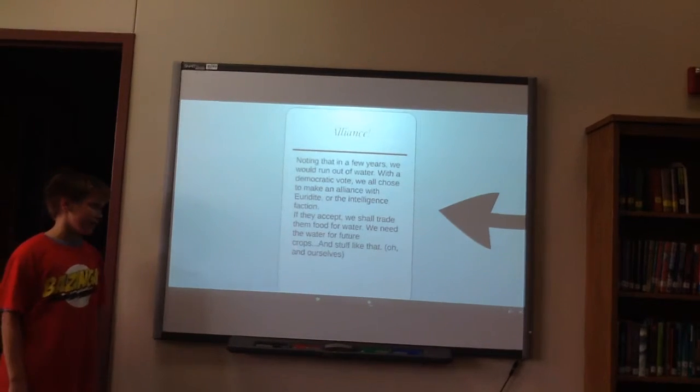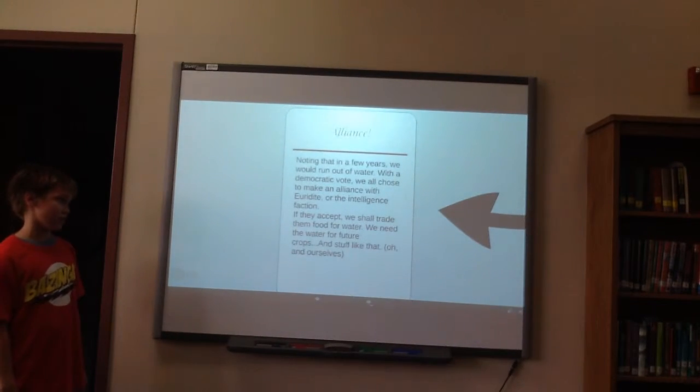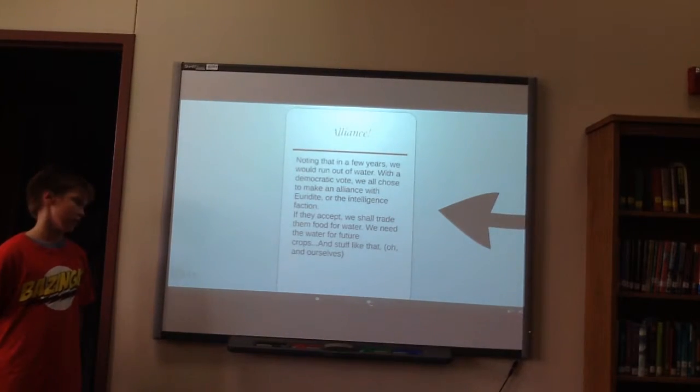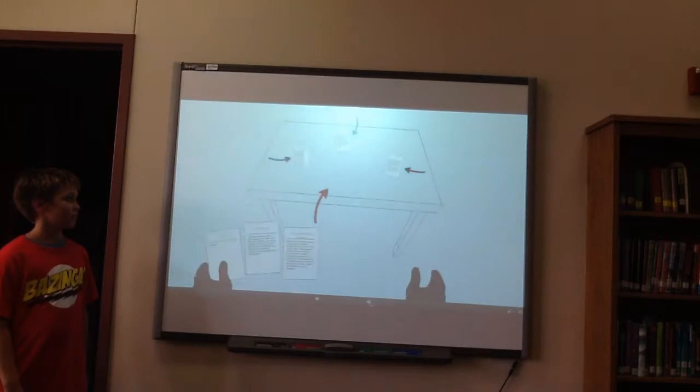Finally, we will make an alliance with the erudite, or the intelligent faction. If they accept, we shall trade them food for water. We need water for future crops and stuff like that, you know, ourselves. And that's my timeline.